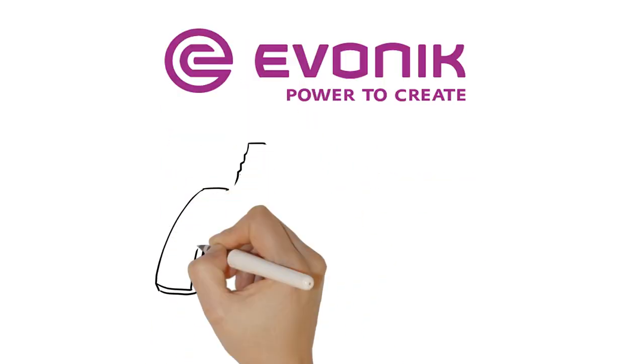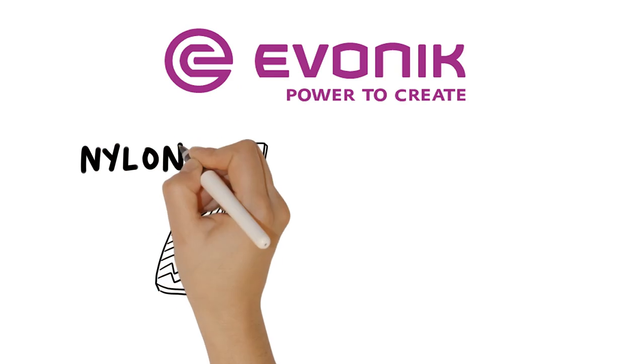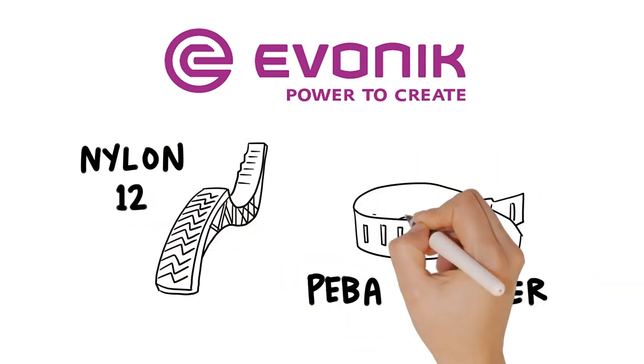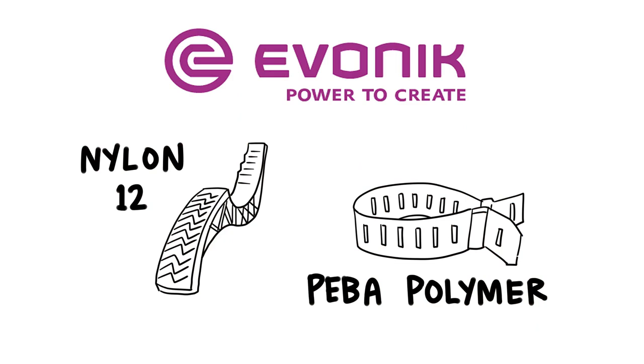For over 20 years, Evonik has been the leading supplier of the highest quality nylon-12 and Piba polymers to Fortune 500 global medical device companies in critical, life-saving applications.